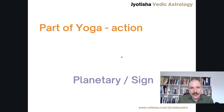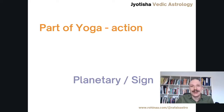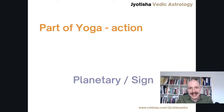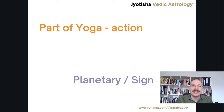Drishti is one type of relationship between the planets. There are also other types of relationships, like Yuti, which is two planets being in one sign, also called conjunction. There is also Parivartana, when planet A is in sign B and the lord of sign B is in sign A — they exchange their places. So we have Yuti, aspects of two types (planetary and sign aspects), and Parivartana.